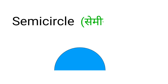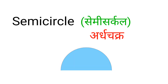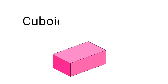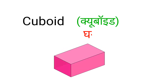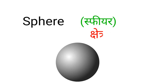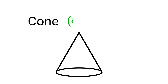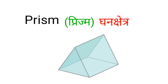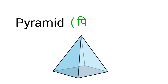Diamond — Diamond means Heera. Cuboid — Cuboid means Ghanav. Sphere — Sphere means Chhetra. Cone — Cone means Sanku. Prism — Prism means Ghan Chhetra. Pyramid — Pyramid means Pyramid.